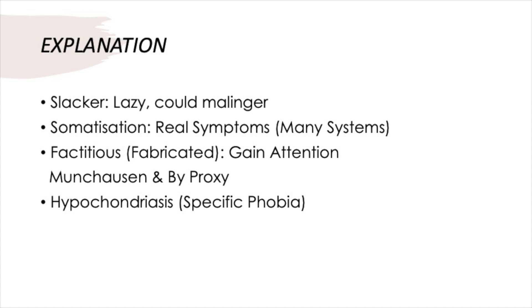Let us review the key terminologies. Malingering: symptoms are intentional and consciously faked for secondary gains such as avoiding work or getting compensation. In somatization disorder: symptoms are unintentional and real, involving many symptoms across many organs. A variant with neurological symptoms — where patients may have pseudo-seizures, hysterical coma, or hemiparesis and appear unconcerned (la belle indifférence) — is called conversion disorder or functional neurological symptom disorder.